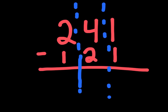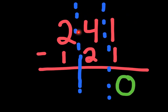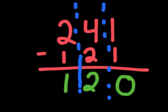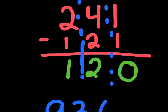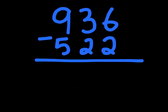Problem one: right hand column — one minus one is zero. Middle column — four minus two is two. Left hand column — two minus one is one. So our answer to 241 minus 121 is 120. Let's go on to problem number two.